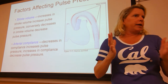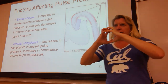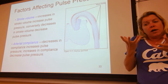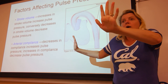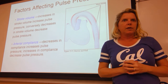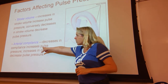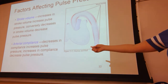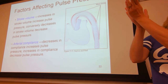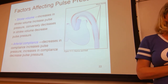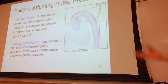If arterial compliance decreases — meaning the vessel is rigid — pulse pressure goes up. That's concerning because the blood vessel could rupture, or you can get the intima shearing away from the tunica media, which can lead to an aneurysm. A decrease in arterial compliance in the direction of rigidity is not what we want.